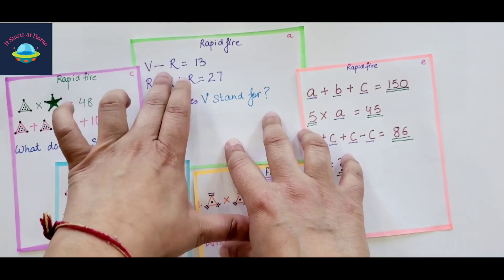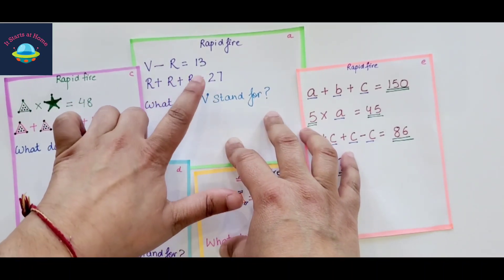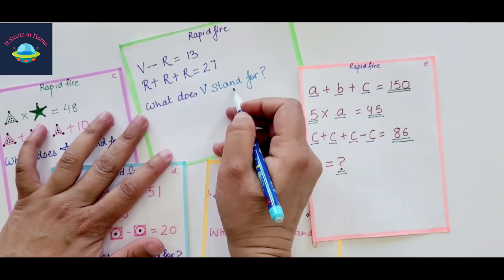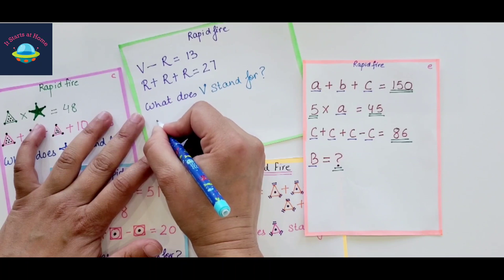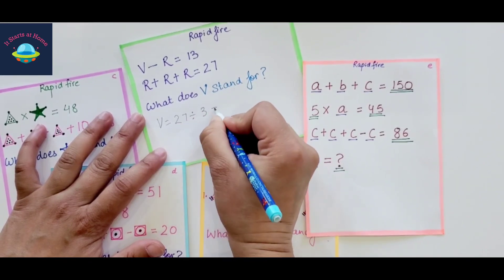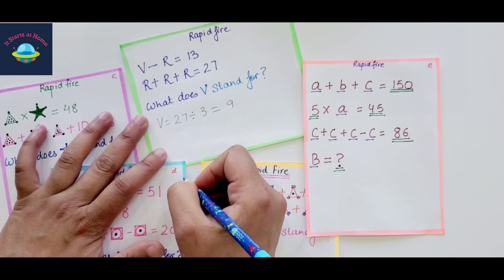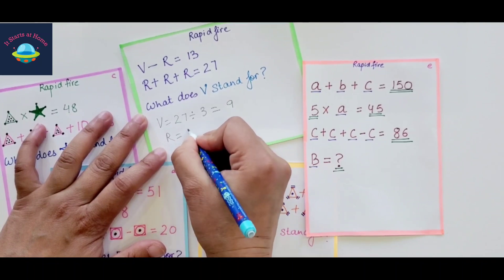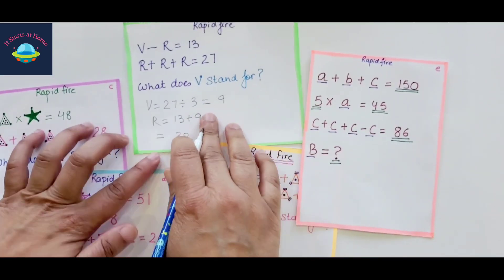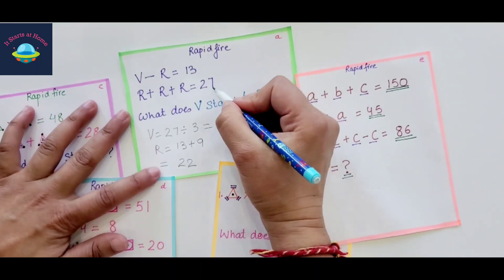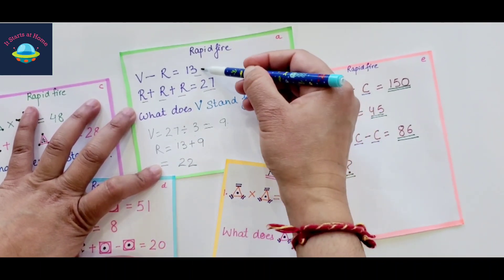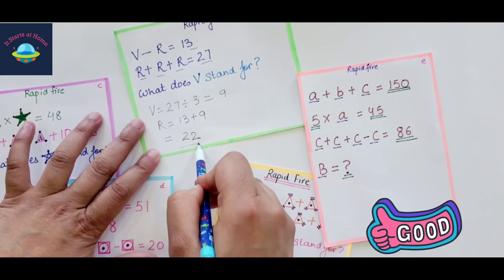Let me take number one, which is V minus R is equal to 13, and R plus R plus R is equal to 27. What does V stand for? We are going to take R is equal to 27 divided by 3, which is 9. And then we are going to take V is equal to 13 plus 9, and that is going to be 22. So that's how we are going to solve that question. We have used the numbers that we have plus these here to divide. And once you have that, you're adding this to this number, and then you have the value of V, which is 22.